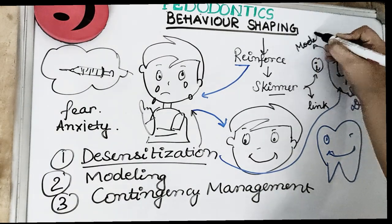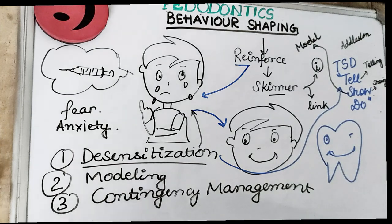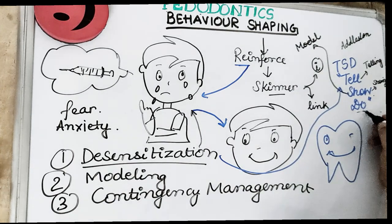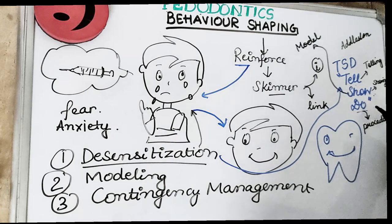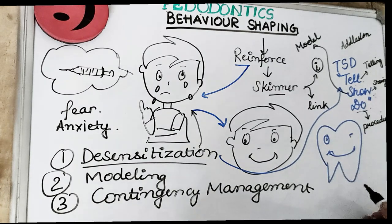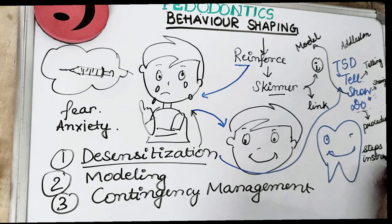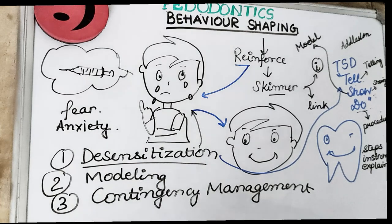After telling, the dentist shows the procedure to the child using a model, or can demonstrate it himself, done slowly. Then the dentist proceeds to do the dental procedure exactly as described. The Tell, Show, Do technique involves telling and showing every step and instrument and explaining what is going to be done.